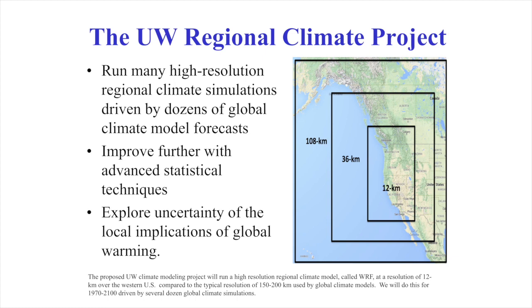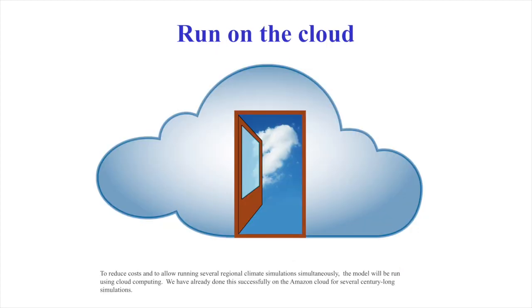The proposed UW climate modeling project will run a high resolution regional climate model called WARF at a resolution of 12 kilometers over the western United States, compared to the typical resolution of 150 to 200 kilometers used by global climate models. We will do this for 1970 through 2100, driven by several dozen global climate simulations. To reduce costs and to allow running several regional climate simulations simultaneously, the model will be run using cloud computing — we have already done this successfully on the Amazon cloud for several century-long simulations.